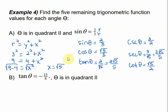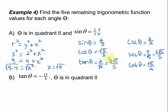Now we need to consider the quadrant. Sine is positive in quadrant one and quadrant two, but in quadrant two, sine is the only thing positive. So we need to go back and change the signs of everything except sine and its reciprocal — cosine, secant, tangent, and cotangent all become negative.